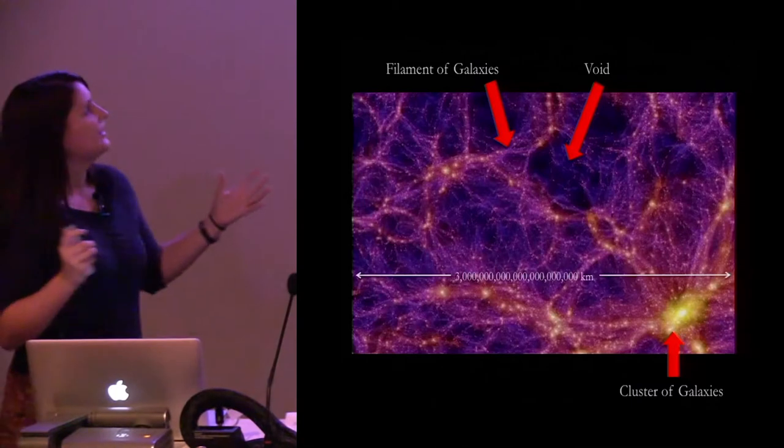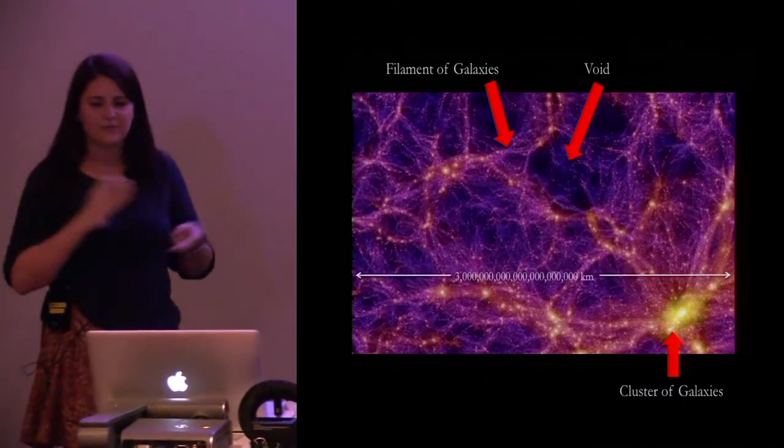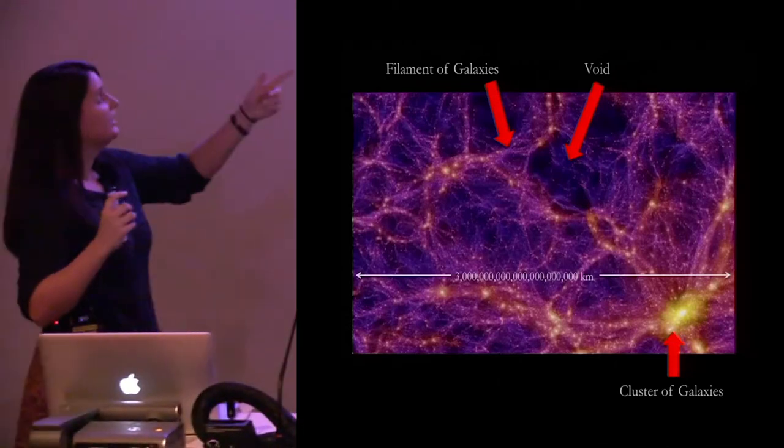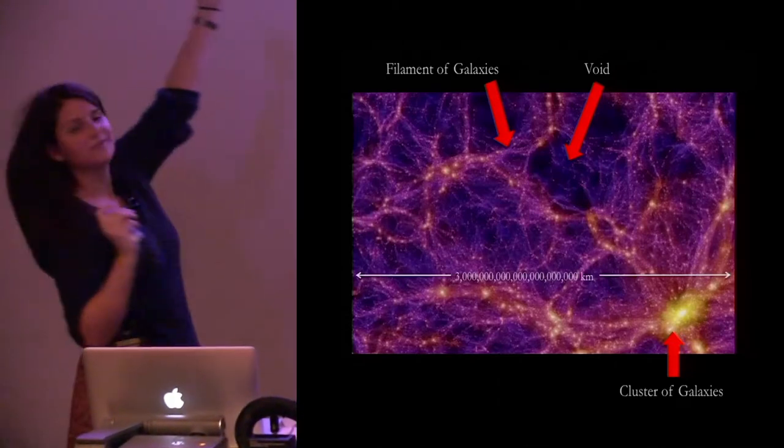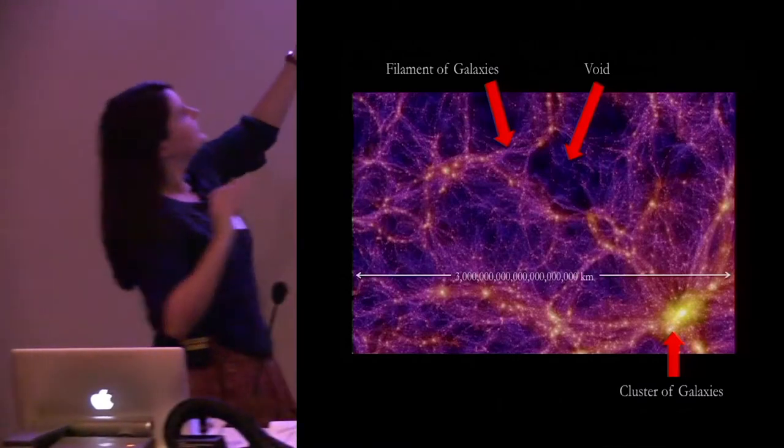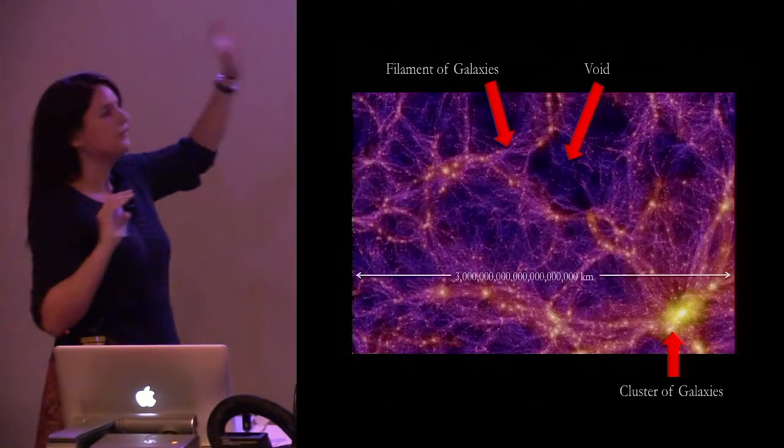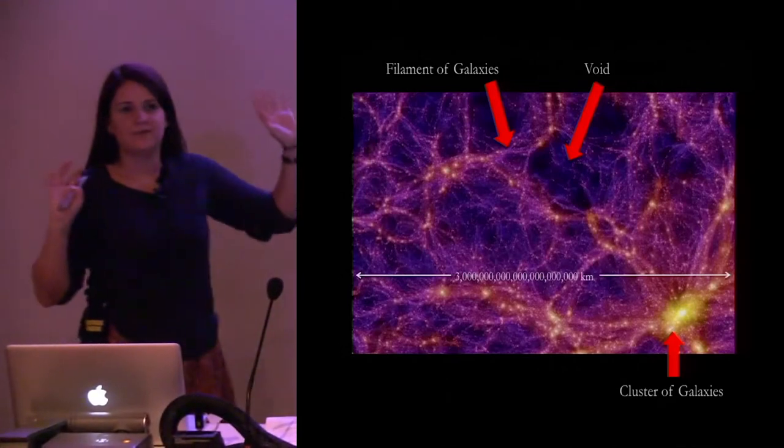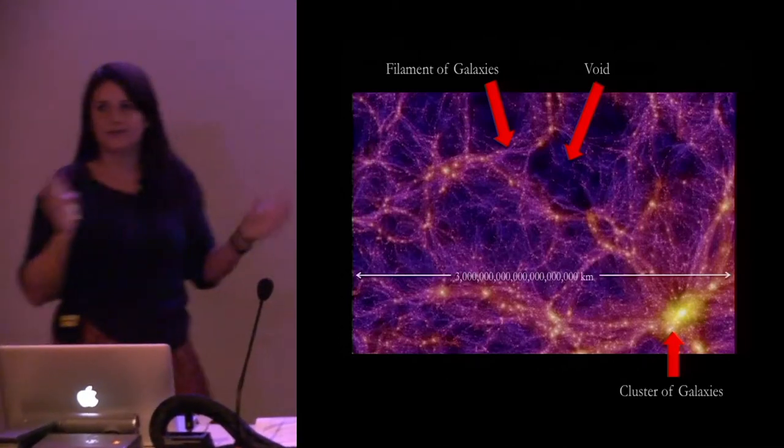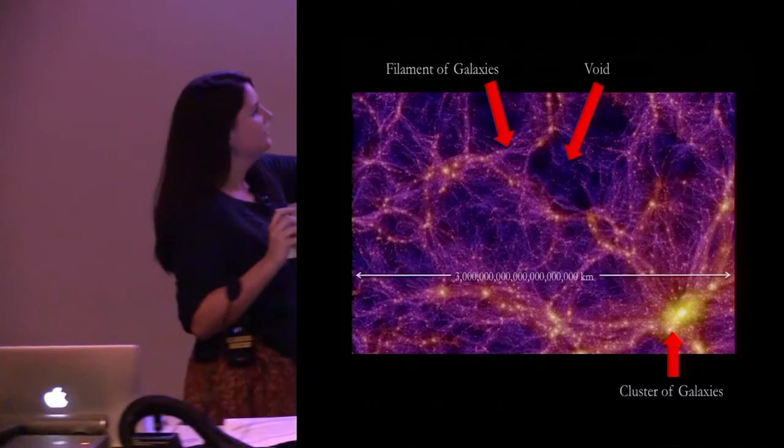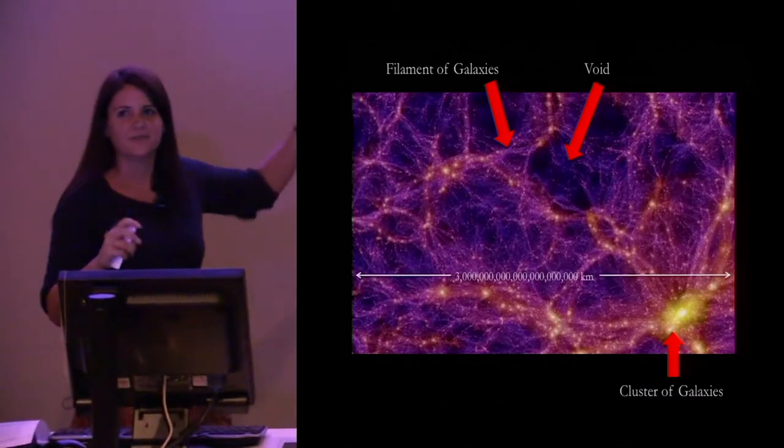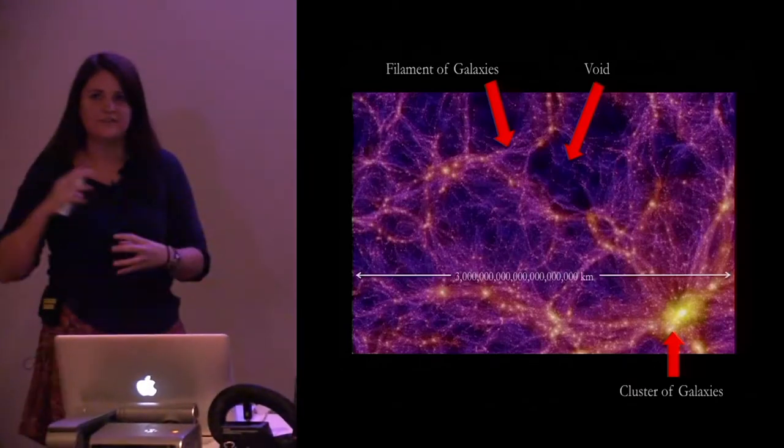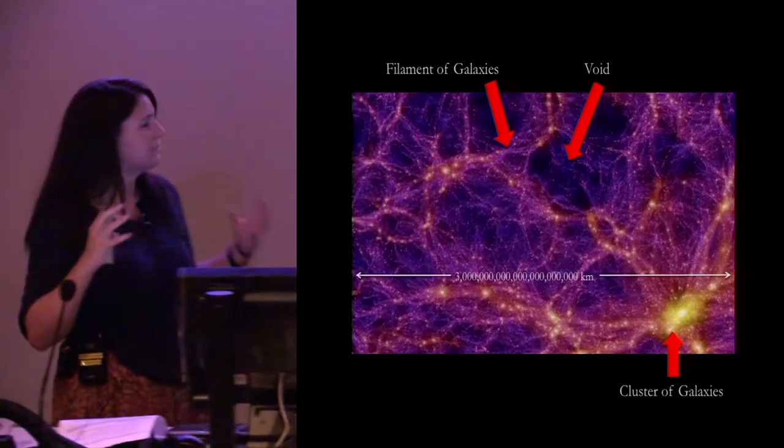So we can characterise the larger scale structure of our universe into about three different types of objects. We've got clusters of galaxies, voids and filaments of galaxies. So this I should say is almost like a density map of our universe. So the yellow things are actually very bright and very dense and the dark purple things are very under dense and there's very little in them. So a cluster of galaxies is basically exactly what it says. It's a cluster of galaxies. They're all together, a whole bunch of galaxies together in a very hot, dense, dynamically active region.